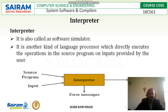In the diagram, you can see that the interpreter takes the source program, uses the input, and directly converts it into the output. If any error occurs in the source program or input, the interpreter will generate an error message.